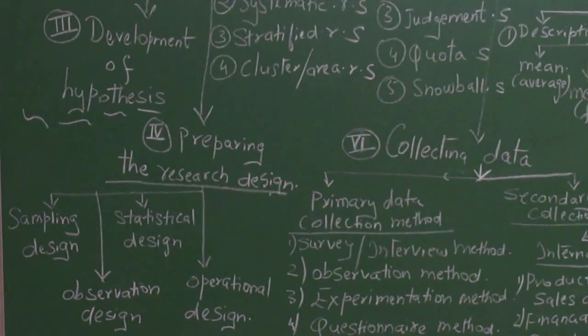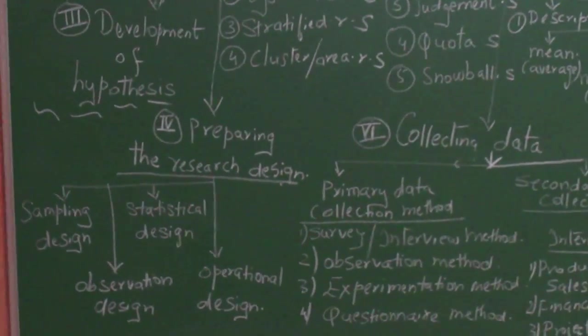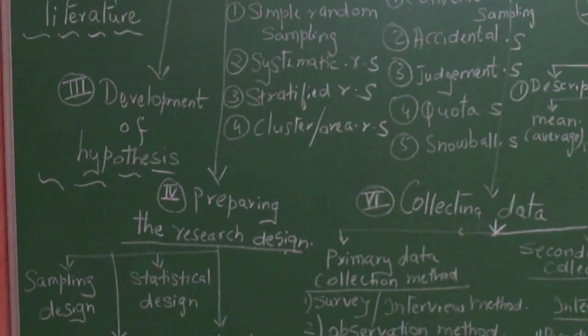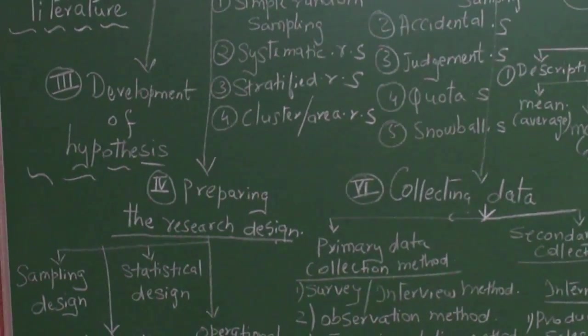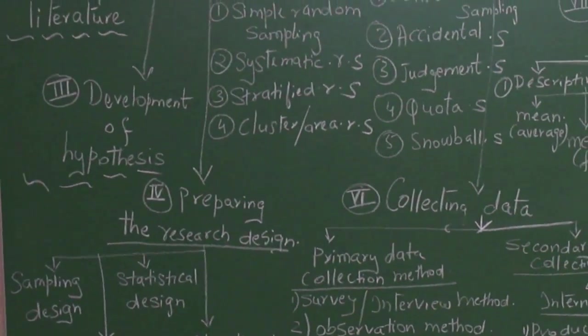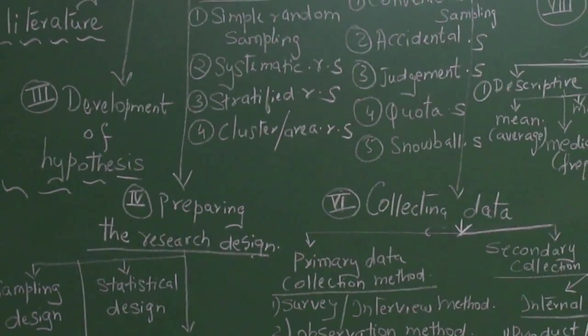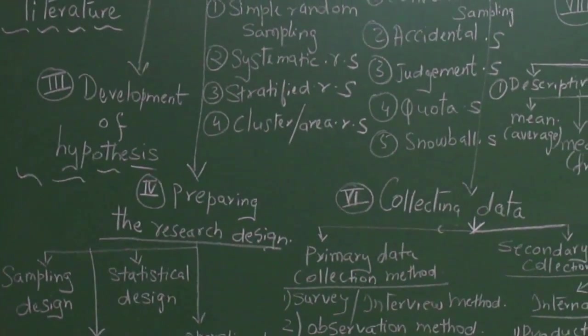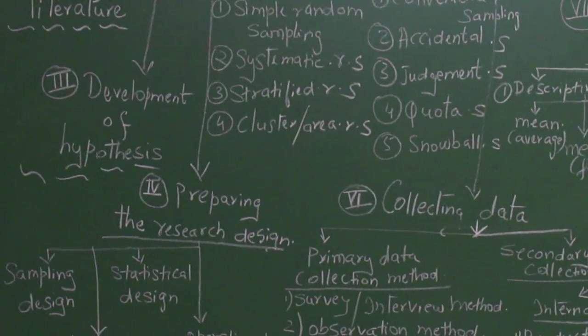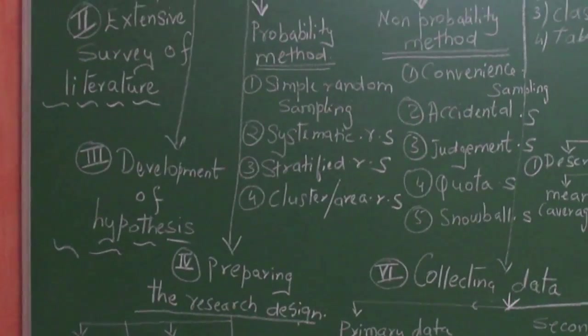Then there is cluster or area random sampling. For example, in the classroom if I want to find out who is from the north, then I would want only those children to come and be a part of that research. I cannot take all the 50. So if 15 children are there, then in that I may take a lottery system. That is cluster or area random sampling. This is the probability method, chance method.